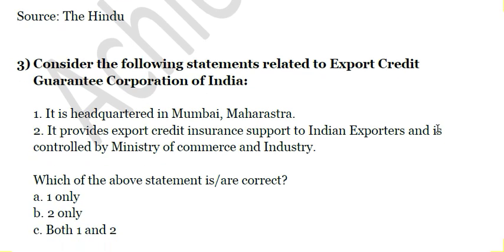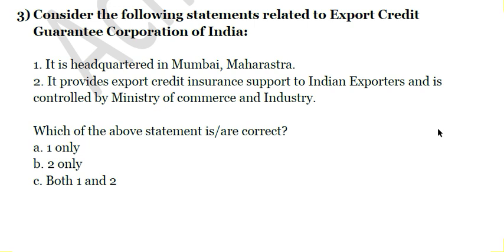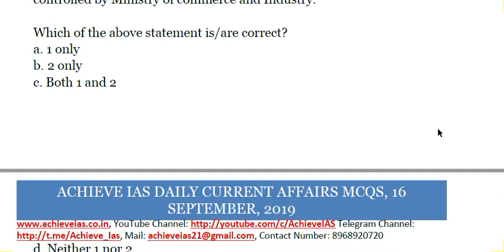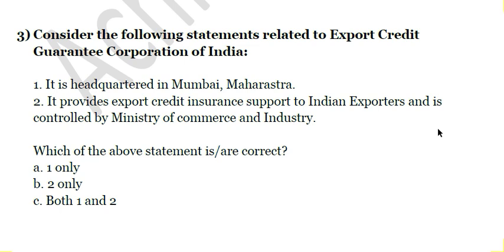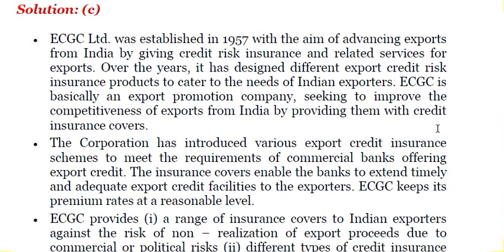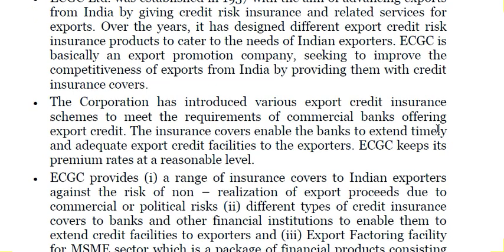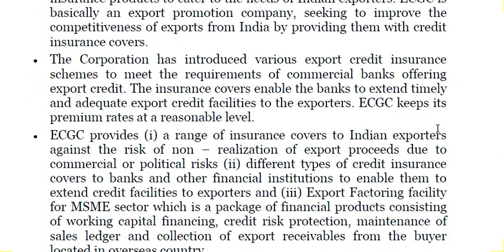Third question: Consider the following statements related to the Export Credit Guarantee Corporation of India (ECGC). First, it is headquartered in Mumbai, Maharashtra. Second, it provides export credit insurance support to Indian exporters and is controlled by the Ministry of Commerce and Industry. Both statements are correct, answer is C. ECGC provides credit insurance support to Indian exporters engaged in the business of exports and was established in 1957 with the aim of advancing exports from India by giving credit risk insurance and related services.